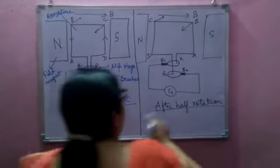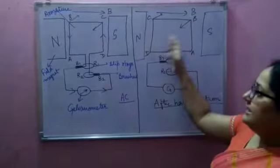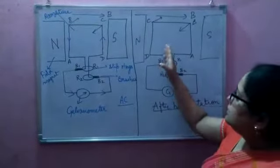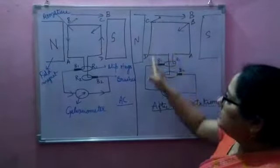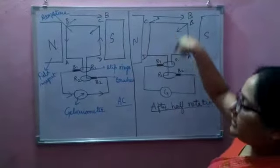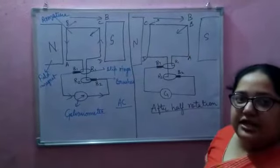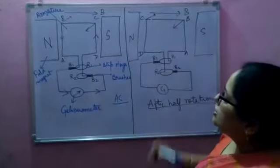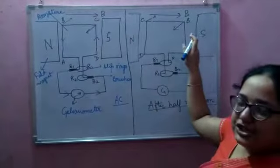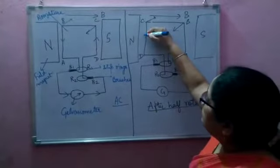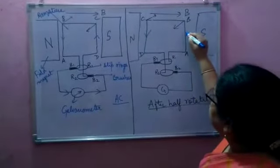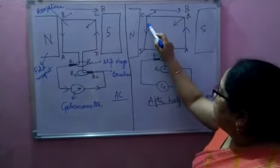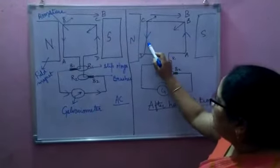Now suppose after half rotation, AB and CD change their places — they change their sides. AB will come to this side and CD will come to this side, and the coil continues to rotate in the clockwise direction. In that case, the direction of current in both arms will interchange — here the direction of current is downward, and here it is upward. But in the outer circuit, the current moves inside.